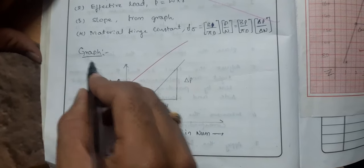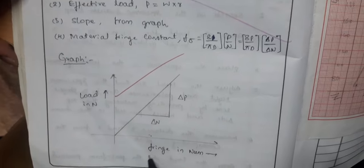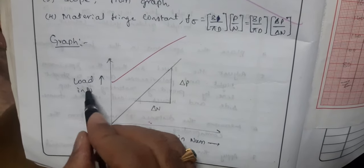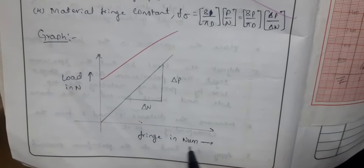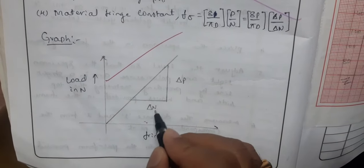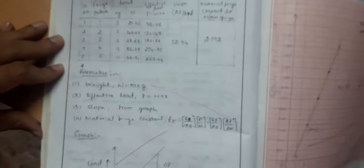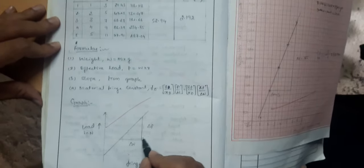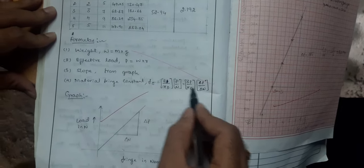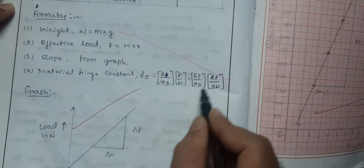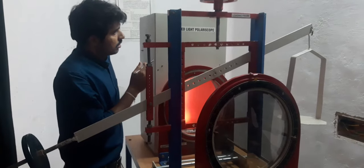This is the graphical representation showing the vertical and horizontal axes. The y-axis gives the load in newtons and the x-axis gives the fringe order in numbers. The slope delta p divided by delta n is obtained from the graph values, and this value is then substituted into the formula to find out the material fringe constant f sigma.